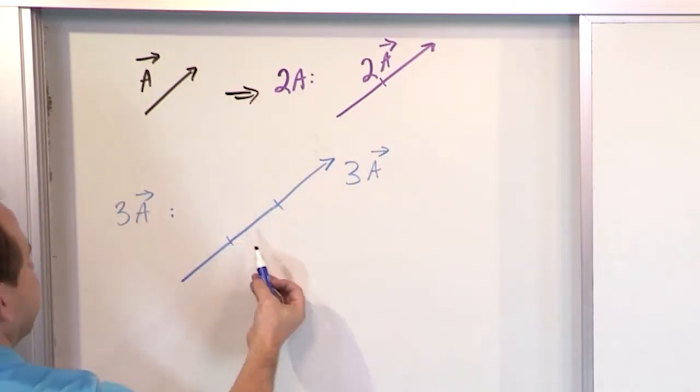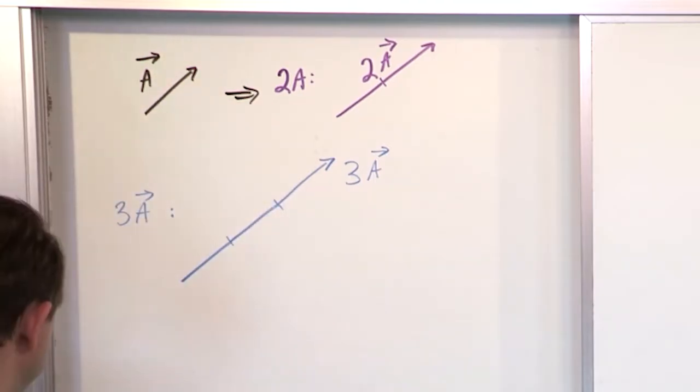The answer doesn't have these tick marks. This is just helping me judge the length of the vector. That's about three times that vector length.